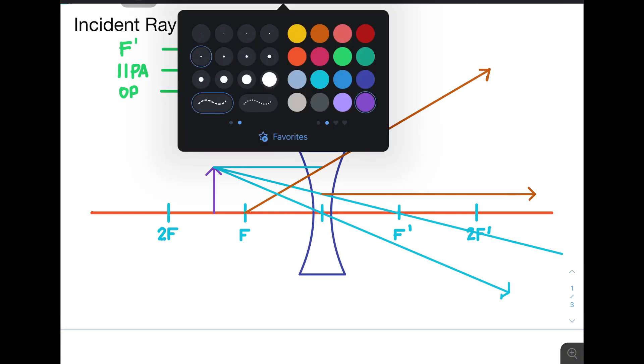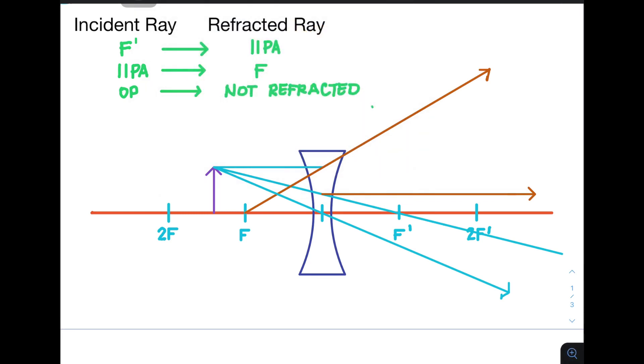usually represented by a broken line. Let's start with the one which is aligned with the focus, like so. Next, parallel with the principal axis, just like that.